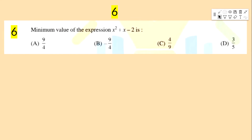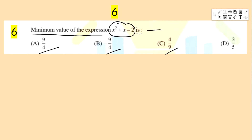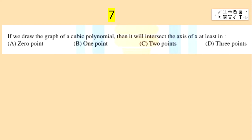Next bit: the minimum value of x² + x − 2 is — options: −9/4, 9/4, 4/9, 3/5.